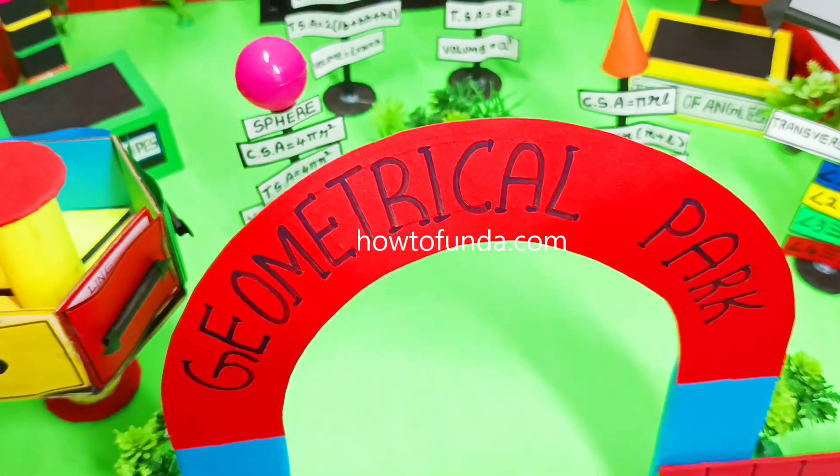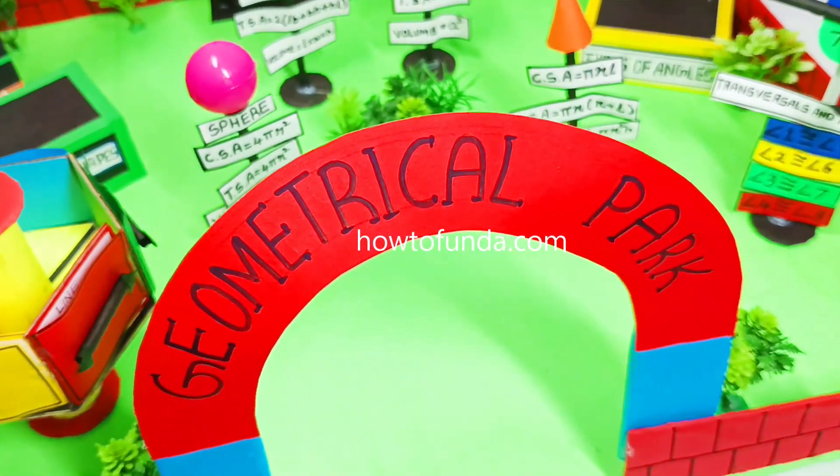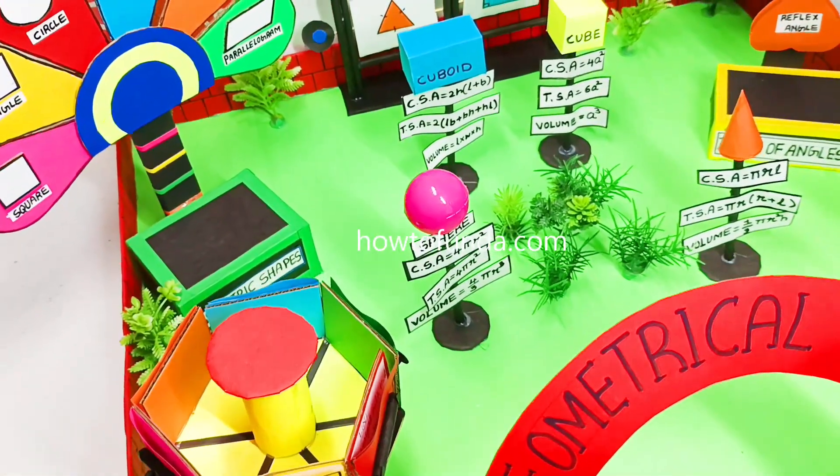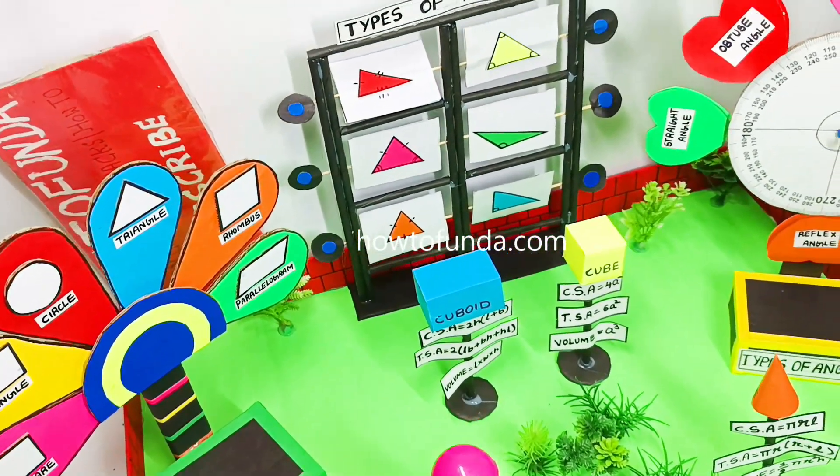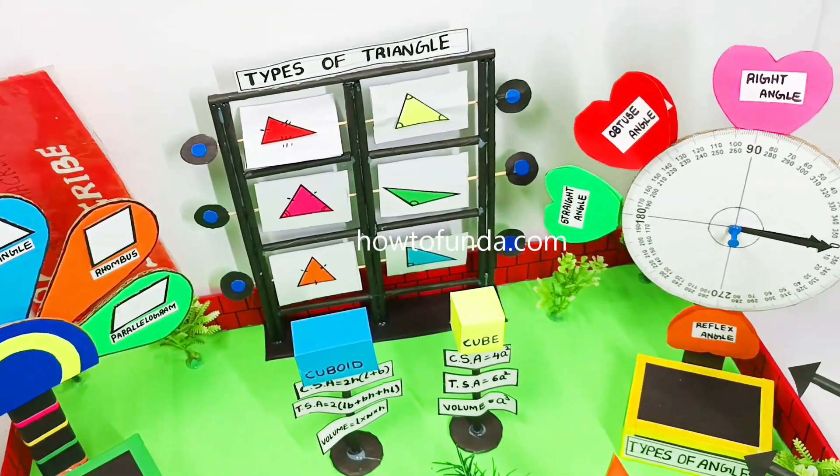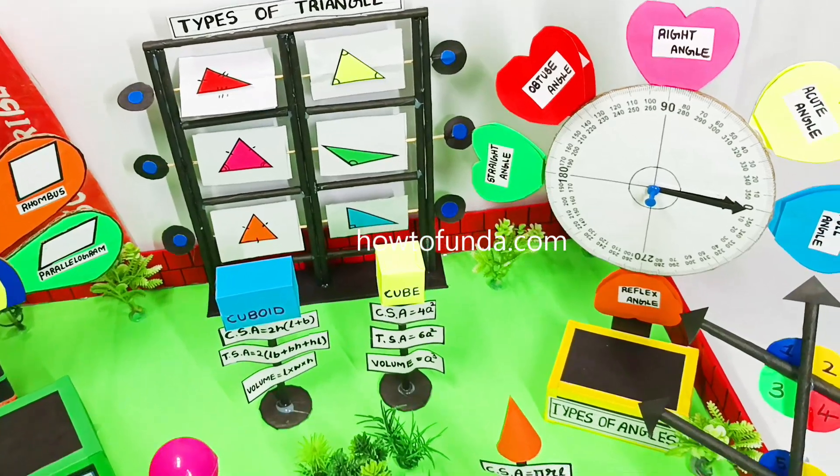I hope you guys got clarity on what are the various items you can place in a geometrical park and how to explain these items from this project. I have clearly talked about this in this video.